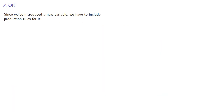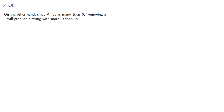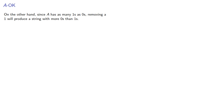Since we've introduced a new variable, we need production rules for it. Since A begins with 1 and ends in 0, we could introduce a rule — removing a 1 and a 0 will still leave A with the same number of 1s and 0s. But the property of A is that it begins with 1 and ends with 0, so removing a 1 and a 0 might not preserve that. On the other hand, since A has as many 1s as 0s, removing a 1 will produce a string with more 0s than 1s — which is in our language, so it would be an S. Since A begins with a 1, this gives us the production rule A produces 1S.